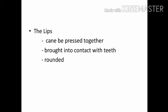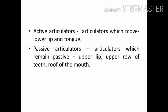The lips are important in speech production. They can be pressed together, brought into contact with the teeth, or rounded. In the articulation of speech sounds, one of the articulating organs moves towards the other which is stationary. The articulators which move are called the active articulators, and the articulators which remain passive are called the passive articulators. The lower lip and the tongue are active articulators, while the upper lip, the upper row of teeth, and the roof of the mouth are always passive.